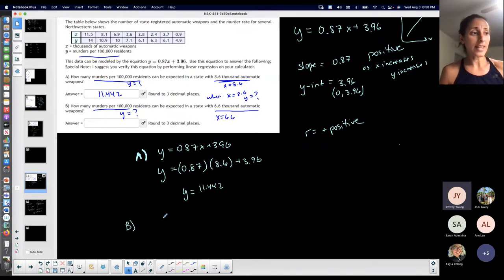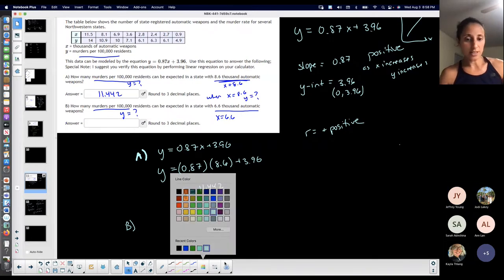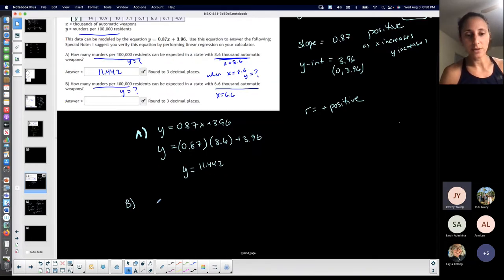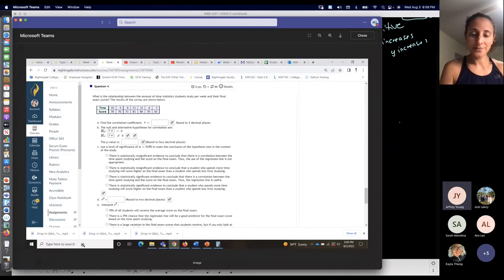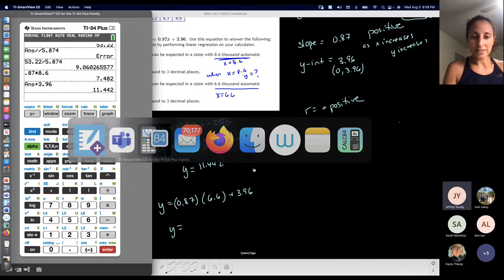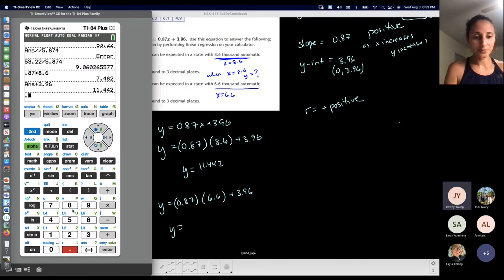They could have done the opposite, highly possible, but this one they're asking you to predict another one. It's the same thing we just did but now with a different number. Now x is 6.6. Basically there are less automatic weapons, so I would expect the amount of murders per 100,000 residents to go down as well. I know it's not the best example, I take them straight from the homework.